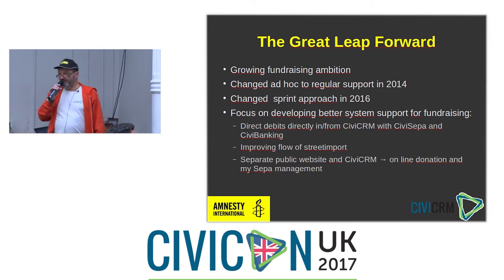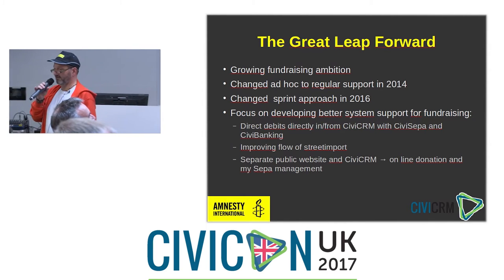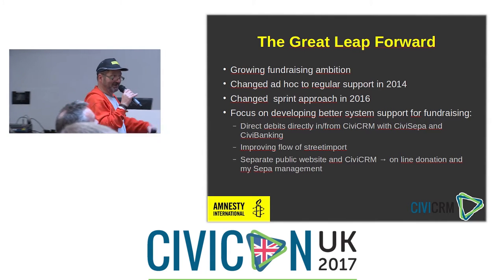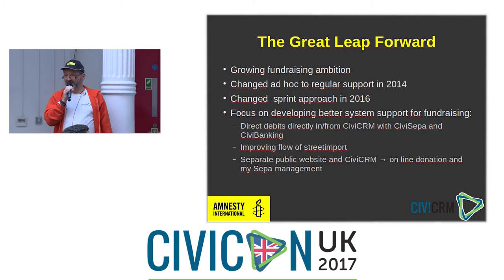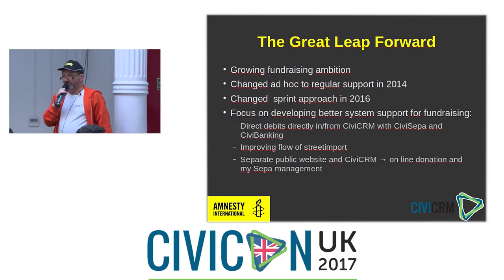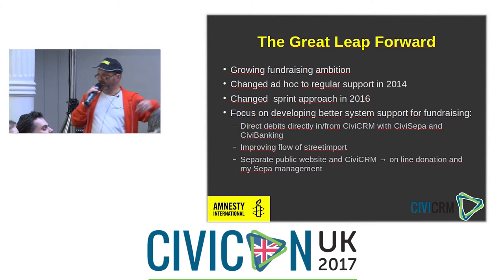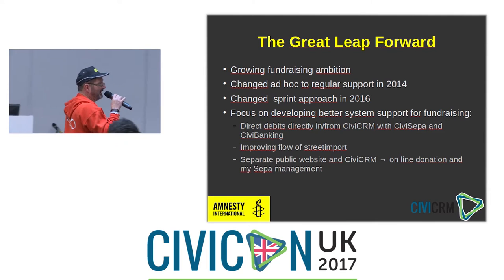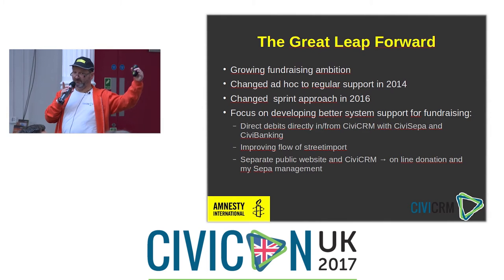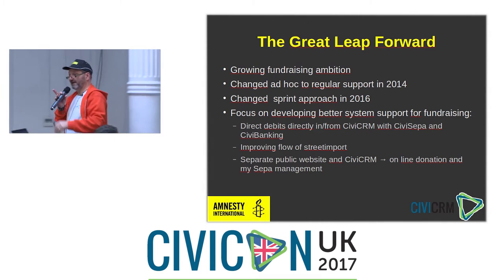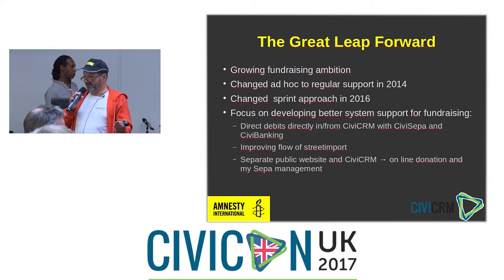What we decided to do was to have direct debits directly in and from CiviCRM. Rather than have one system where you send payments from and then key them manually, we want to do that directly using CiviSEPA for the stream going out and CiviBanking for the bank transactions coming in. And we're going to improve the flow of street import, because Amnesty uses a lot of street recruitment — people out on the streets recruiting donors. There was a time lapse of about 60 days between when someone signs up on the street and when the first payment comes in. If you improve that, you're almost finding money because you get an additional month of income.